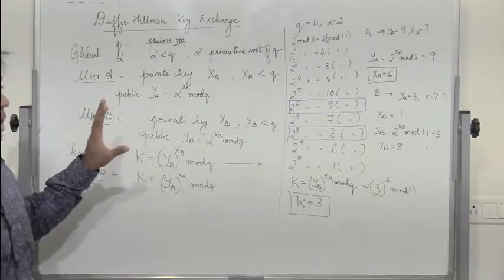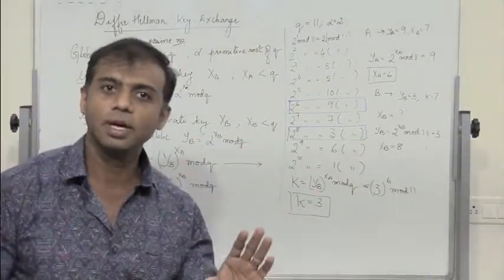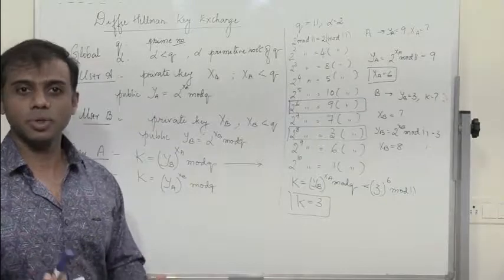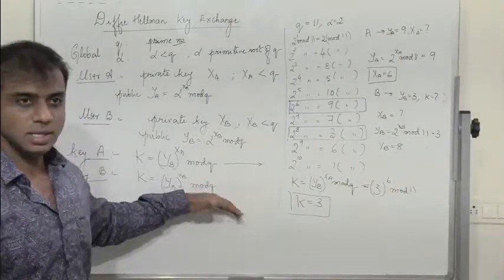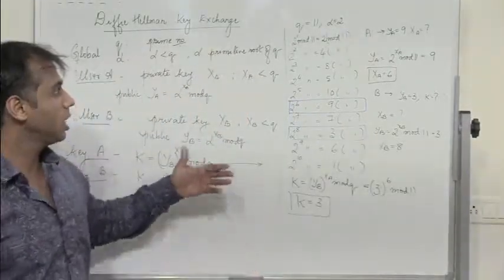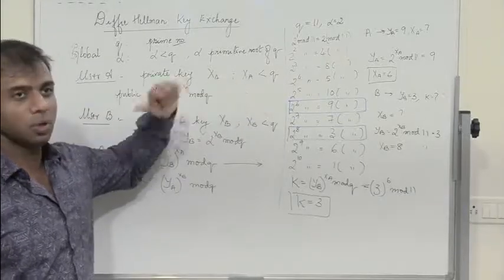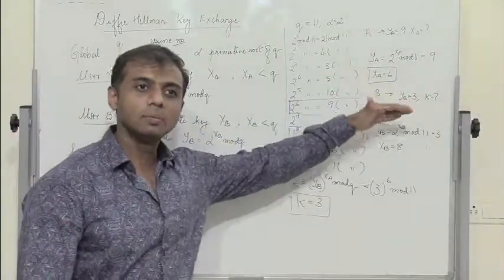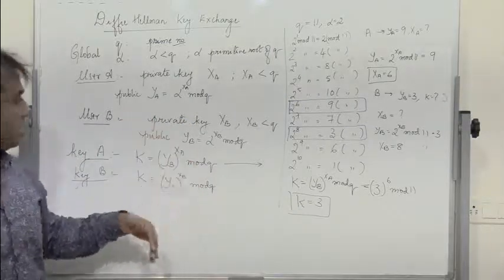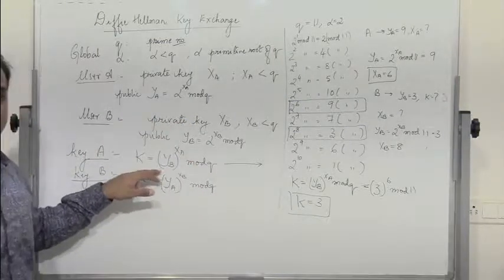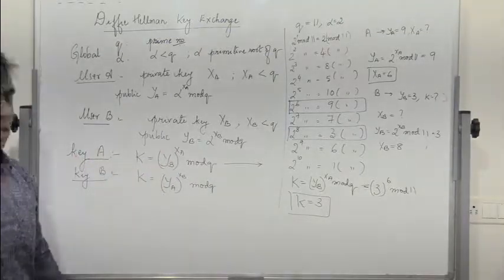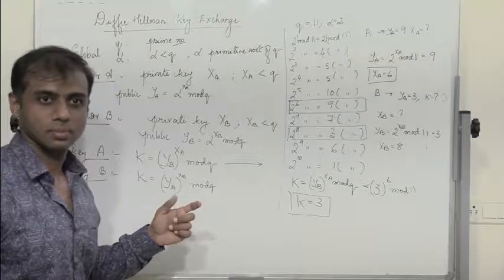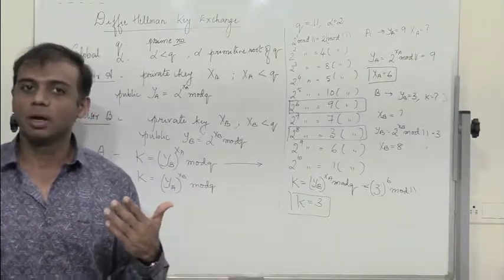So we have briefly understood Diffie-Hellman key exchange. One of its biggest advantages is that we can exchange keys without actually distributing them. The secret key is generated at both ends A and B without actually distributing it. A and B generate their own public-private key pairs, share their public keys with each other, and each uses the other's public key along with their own private key to generate the same number, which becomes the shared secret. A and B can then proceed with the process of encryption using this key.